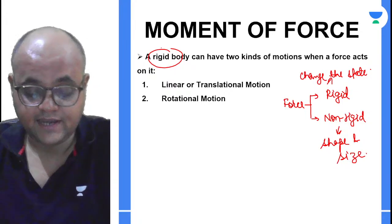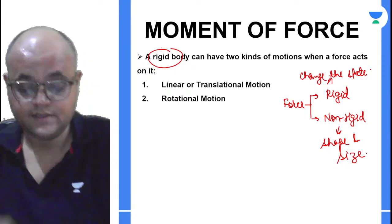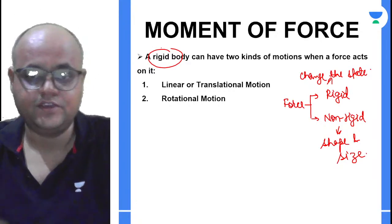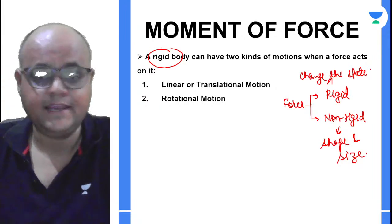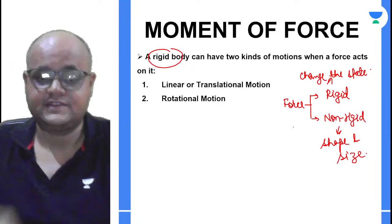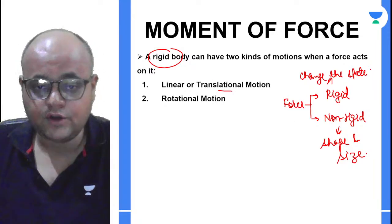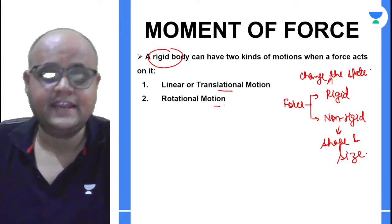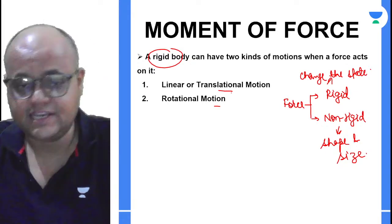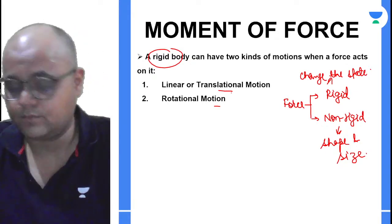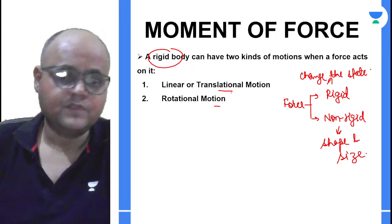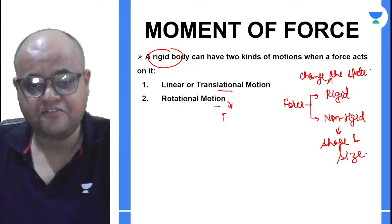When we have a rigid body, the force can create two effects: it can either create a linear or translational motion, or it can create a rotational motion. We need to understand the difference between them. For rotational motion, the body has to be fixed and the motion has to be about an axis.